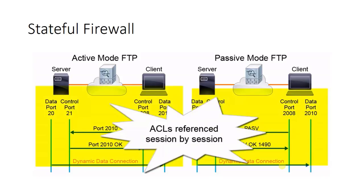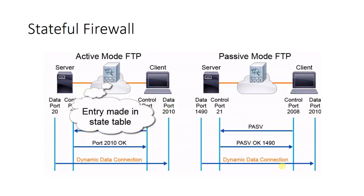ACLs used on a stateless packet filter are processed packet by packet, but ACLs used on stateful firewalls are only referenced session by session. If a SYN packet is received at a stateful firewall, the stateful firewall checks the ACL configuration to determine if it should allow the connection. If it is permitted, an entry is made in the state table, which then controls the bidirectional flow of all packets associated with that connection.